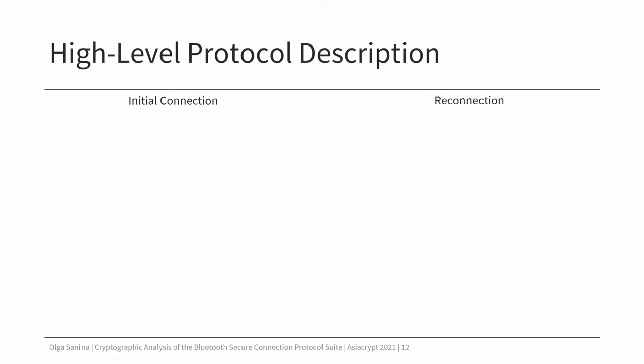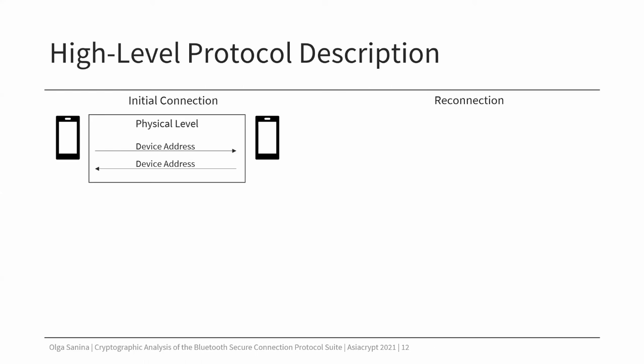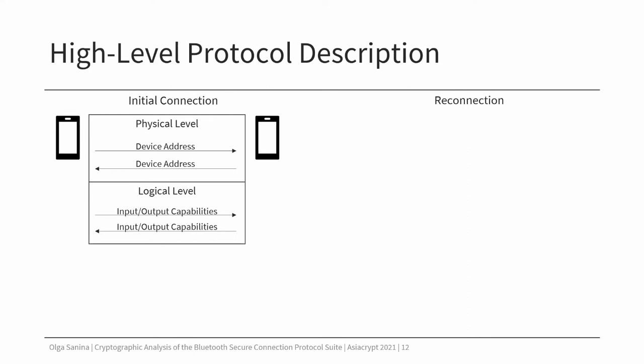Bluetooth key exchange consists of the initial connection, where the devices connect for the first time and establish a bond, and a reconnection, when the bonded devices want to communicate with each other again. For the initial connection, the devices start with connecting on the physical level, where both send their device addresses for identification. After that, the devices need to connect on the logical level, where they exchange device-specific information such as input and output capabilities of the devices.